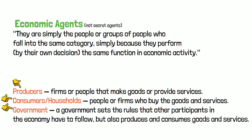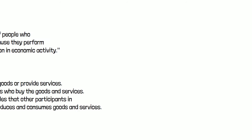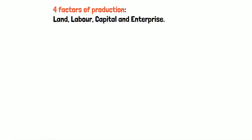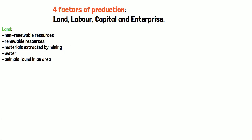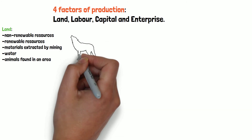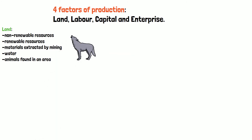Resources — inputs used to make the things people want and need, outputs — can be divided into four factors of production. These factors are land, labor, capital, and enterprise. Land includes all the earth's natural resources: non-renewable resources such as natural gas, oil, and coal, and renewable resources like wind, materials extracted by mining, water, and animals found in a certain area.